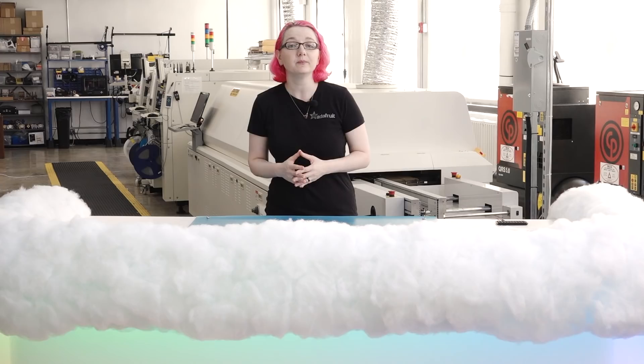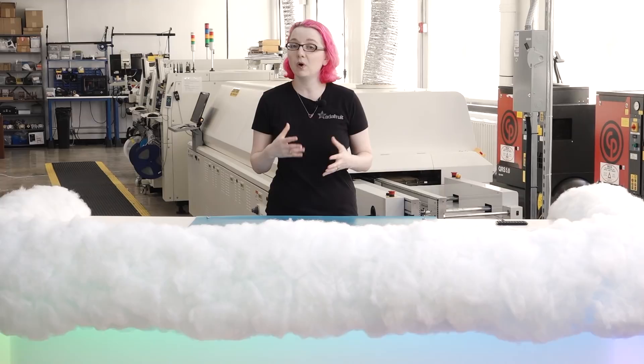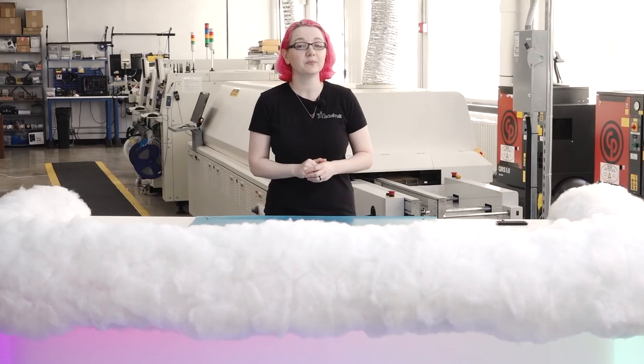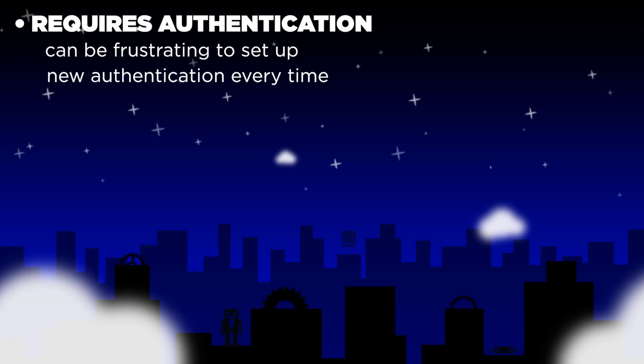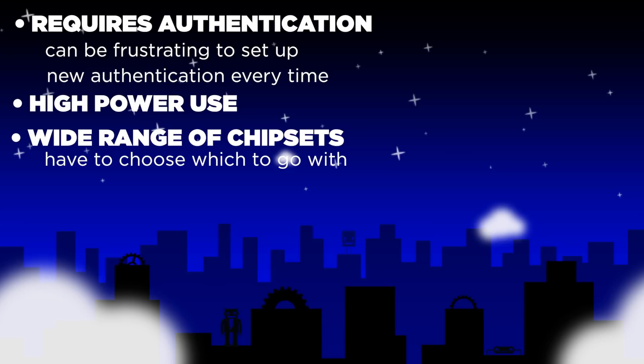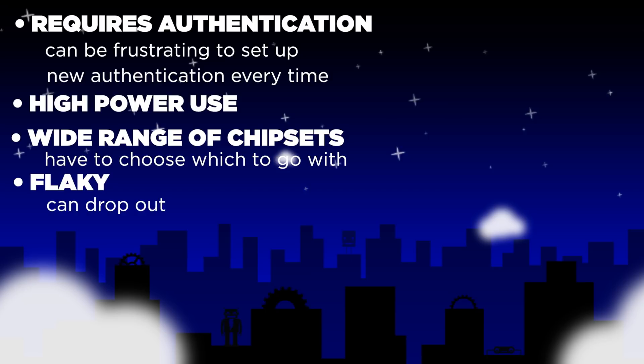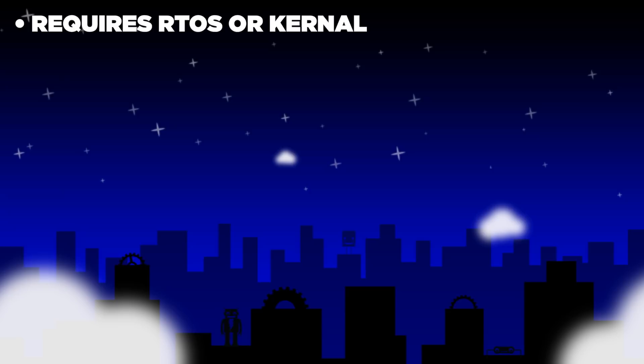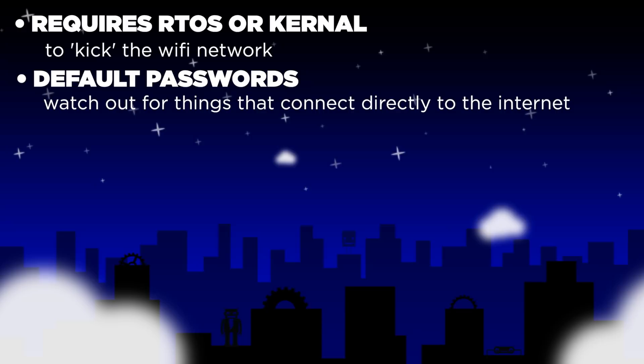Sometimes you can get the microcontroller and Wi-Fi chip all in one to save space and money. But Wi-Fi has challenges too. The biggest is that it requires authentication, which can be frustrating to set up — you have to authenticate each time you get to a new access point. There's high power usage unless you do a lot of work to manage it. There's a wide range of embedded access chipsets to choose from. There's flakiness and dropouts inherent to wireless communication, which can be challenging to debug. A really good Wi-Fi stack may require a real-time operating system to keep the network up and running.